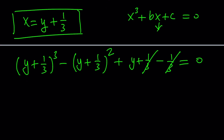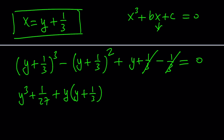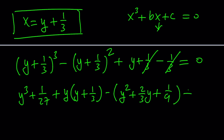Let's go ahead and expand all of these. The way I expand the cube is: I cube the first term, I cube the second term, and then I do the 3ab thing, which gives me y multiplied by a plus b, which is y plus one third. That's how I memorize it. You can also use the binomial theorem. Then just expand the quadratic normally.